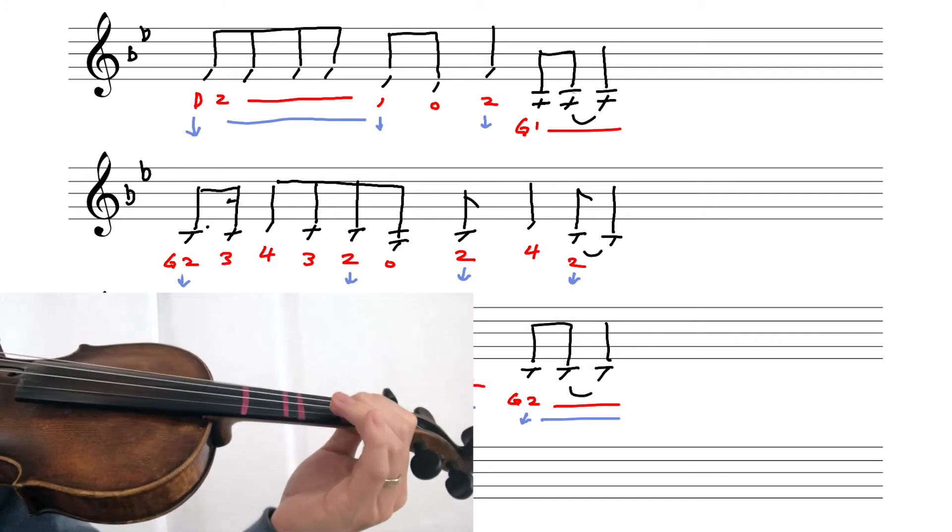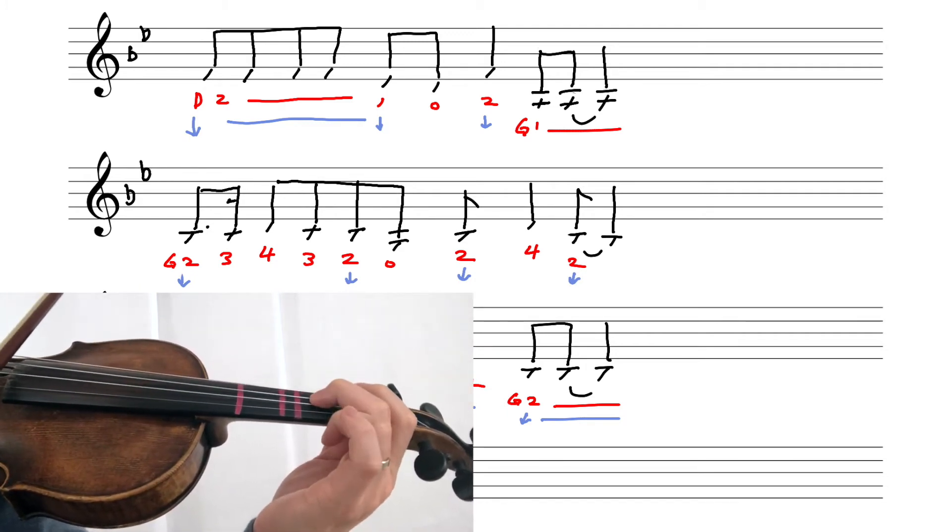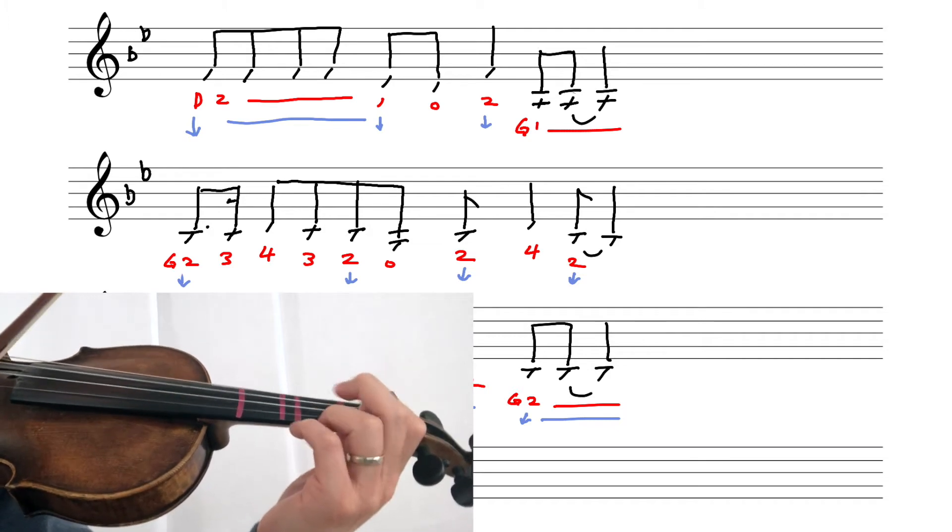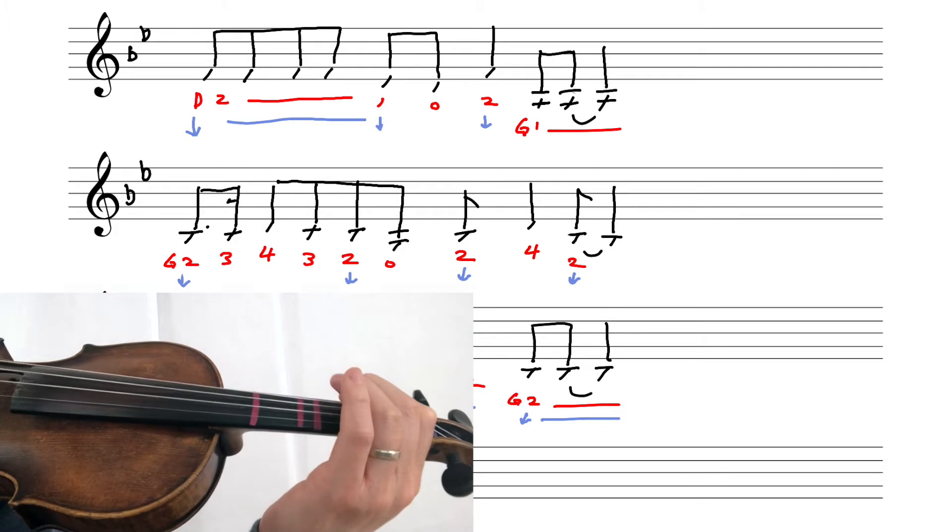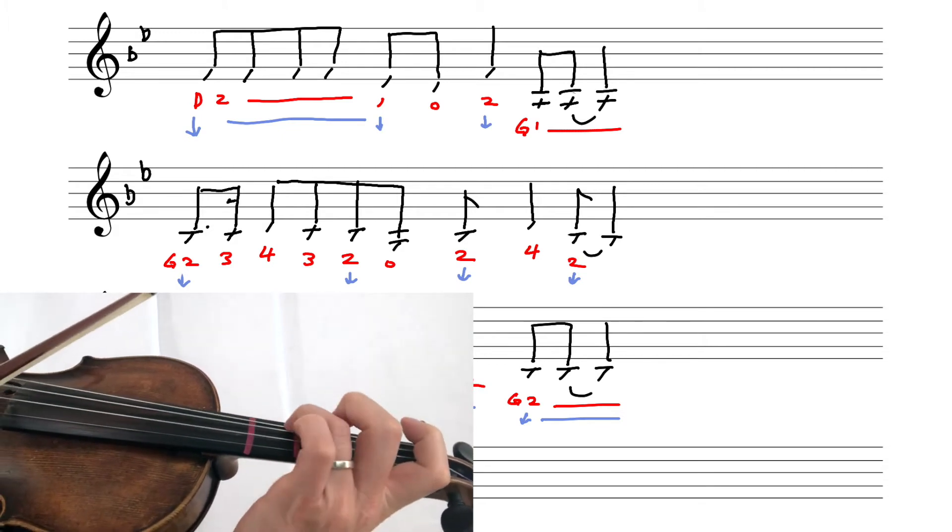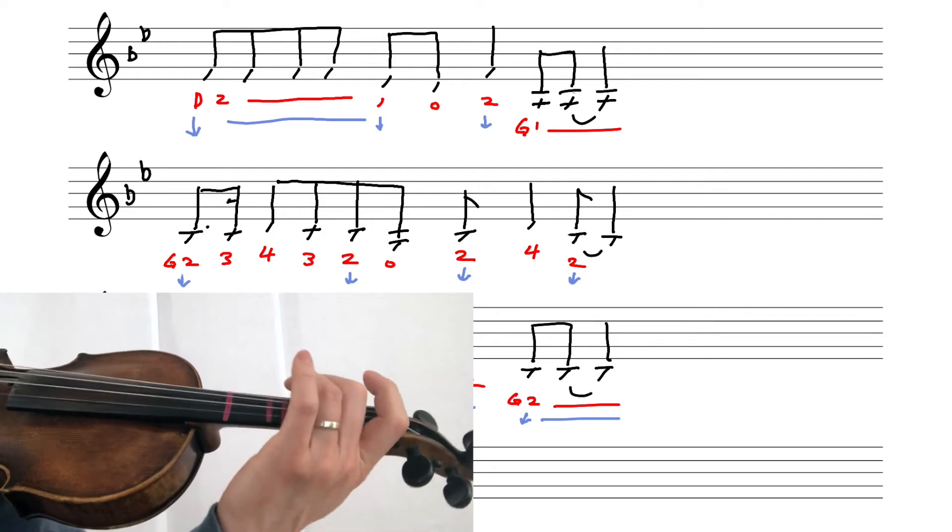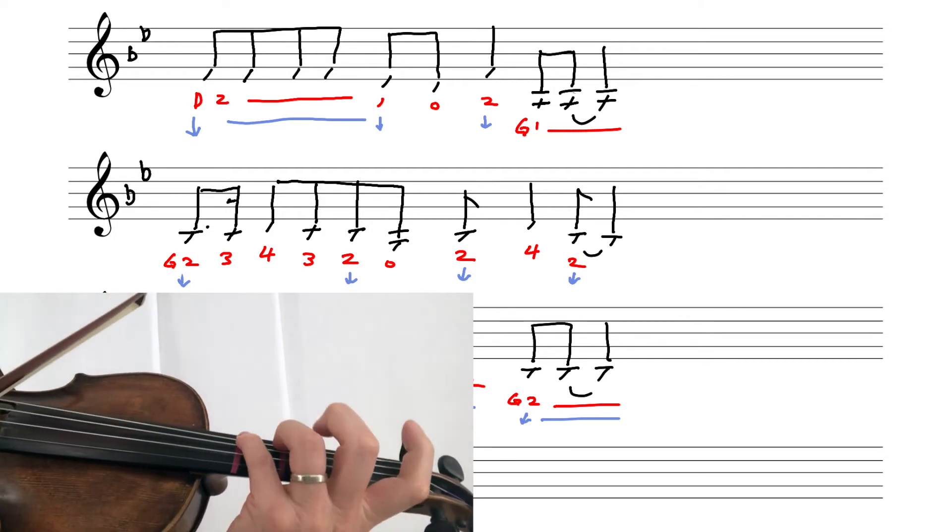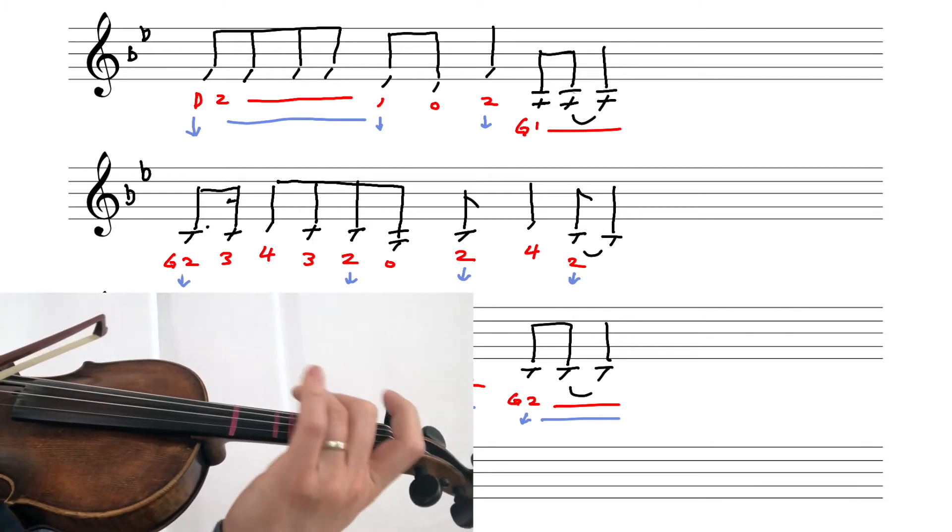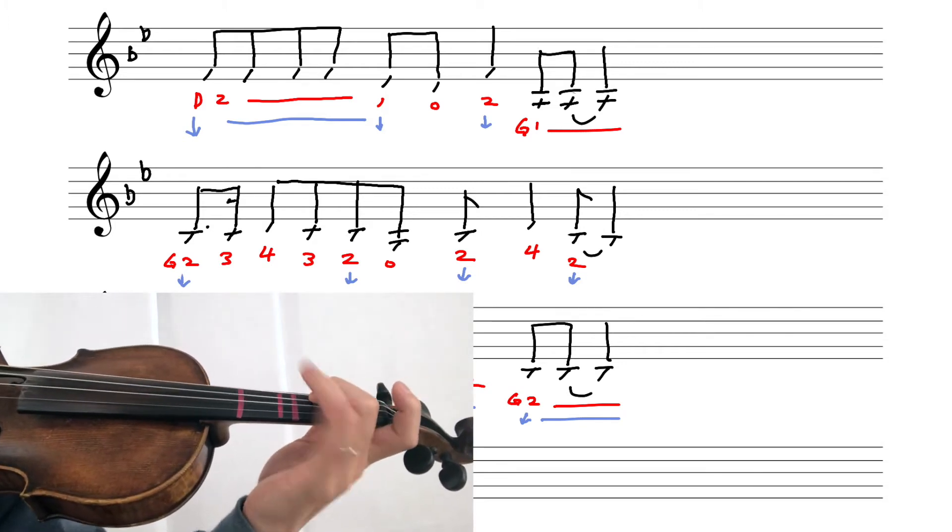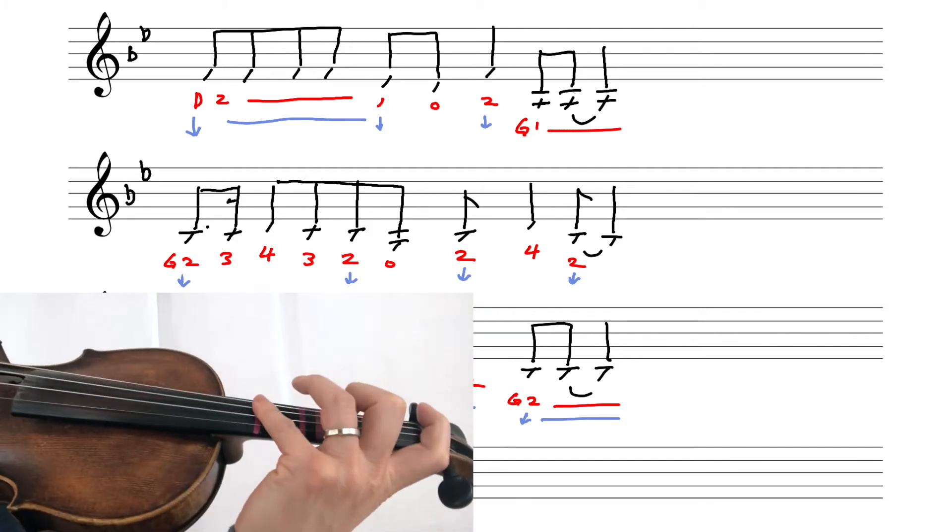Okay, moving on to second page: D low two and going to D low one. Okay, second line one more time. That G low two to four, it's quite a stretch, so make sure you stretch out for that.